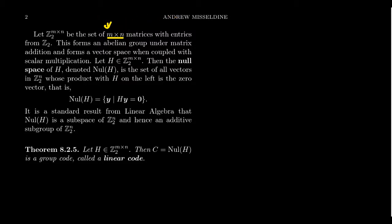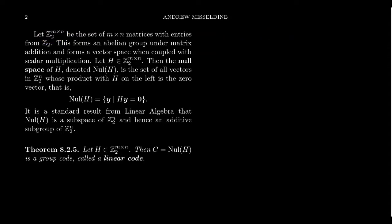This notation is not super standard. In Judson, they use the notation M sub M by N then Z2 — something like that — meaning the matrices which are M by N whose scalars come from Z2. It doesn't make much of a difference, but this is the notation used in the linear algebra course, so that's what we're going to use here as well.